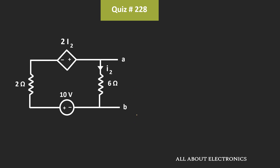If you closely observe this circuit, it contains both independent and dependent sources. To find the Thevenin's equivalent resistance, we will first find the Thevenin's equivalent voltage between these two terminals, and then we will find the short circuit current.